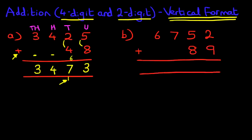I have written the question out, spaced the numbers so that we know what we're doing. We have 6,752 plus 89. Let's label the columns. Units, tens, hundreds and thousands.